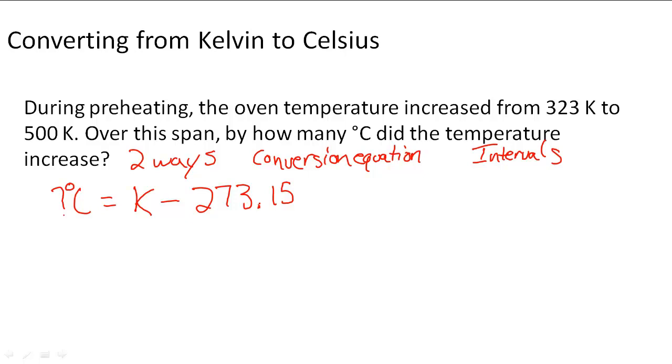So what we can do is 323 minus 273.15, and we get 49.85 degrees Celsius. And then we're going to do 500 minus 273.15, and we get 226.85.